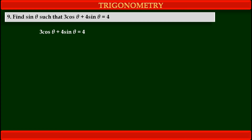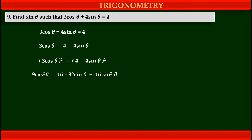Shifting 4sin theta to the right hand side we get 3cos theta is equal to 4 minus 4sin theta. Now squaring both sides we get (3cos theta)² on the left hand side is equal to (4 minus 4sin theta)² on the right hand side. Solving these squared terms, we get 9cos²theta on the left equals 16 minus 32sin theta plus 16sin²theta on the right.